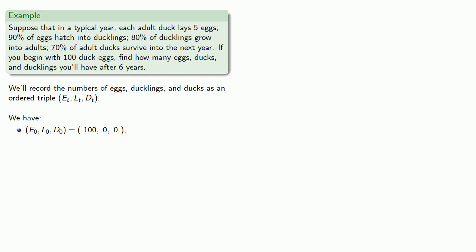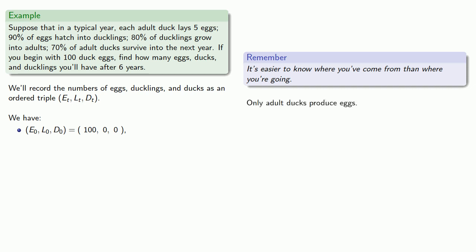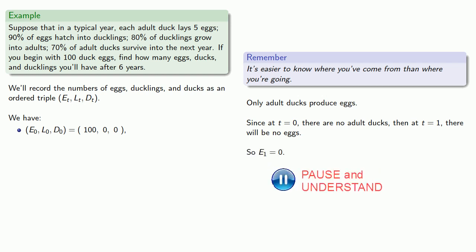So let's move forward in time. And an important idea to remember here is that it's easier to know where you've come from than where you're going. So remember, only adult ducks produce eggs. Since at t equals zero there are no adult ducks, then at t equals one there will be no eggs. So E_1 is equal to zero. And we'll record that as the first component of our ordered triple (E_1, L_1, D_1).